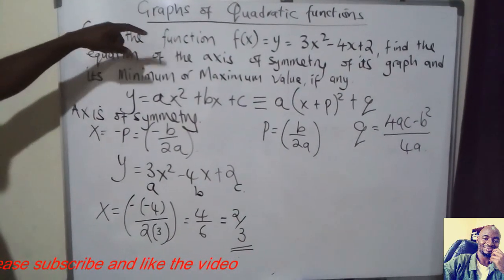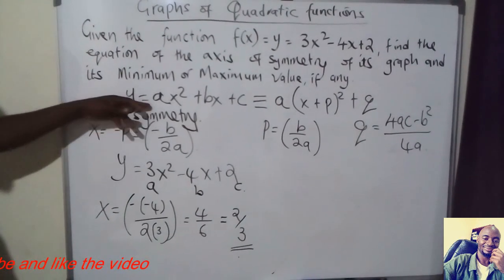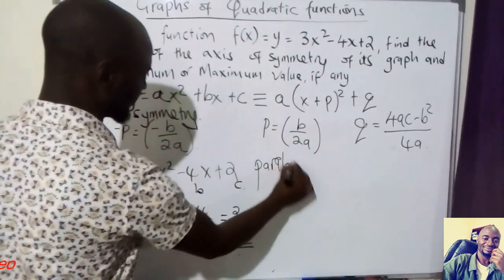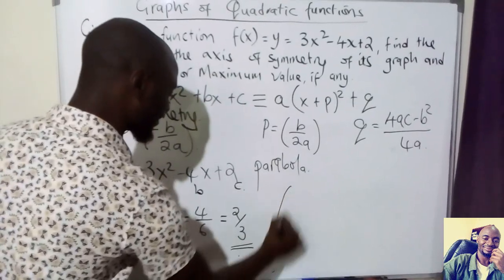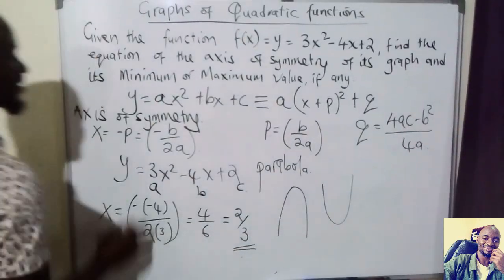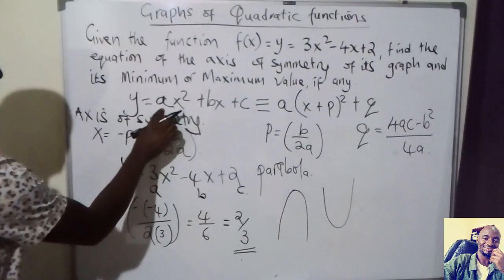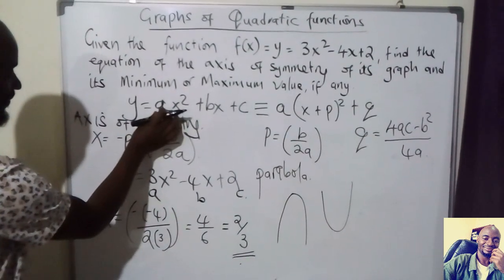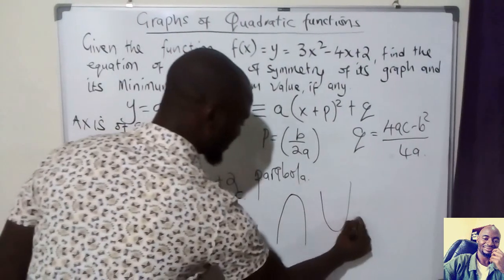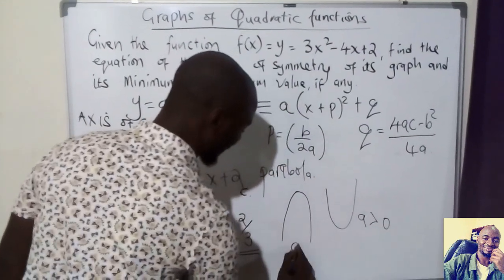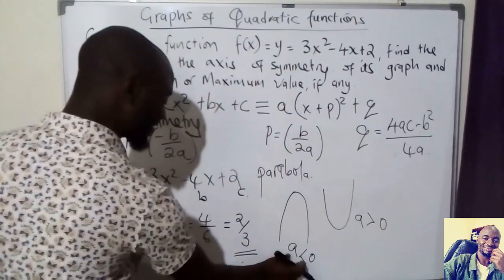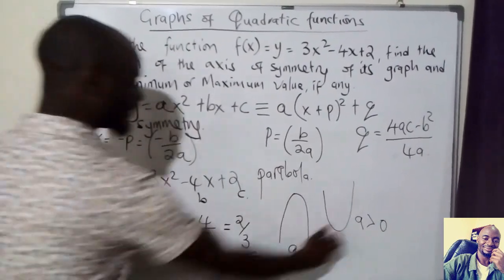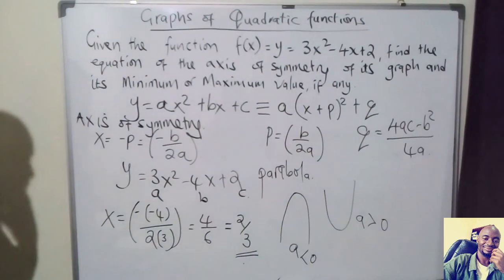When you look at quadratic functions, the graph will be a parabola. This parabola can open downwards or upwards depending on the value of a. If a is greater than 0, the parabola opens upwards — that's a smile. If a is less than 0, the parabola opens downwards — that's a frown. If you are negative, you get a frown; if you are positive, you smile. That's the easiest way to remember.